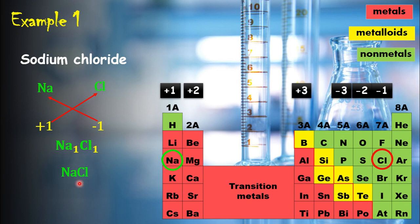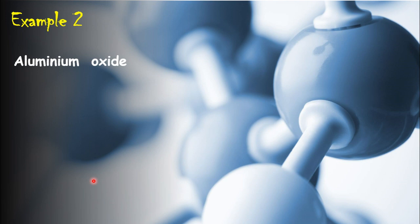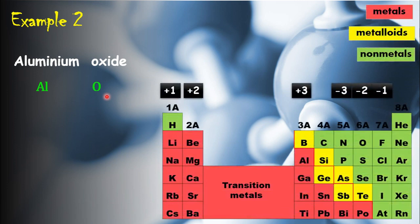Note that ionic compounds are always chemically neutral — that means all the positive charges equal the negative charges. Here sodium has a plus one charge and chlorine has a minus one charge, so it is chemically neutral. Let's look at another example: aluminium oxide. The positive ion is aluminium and the negative ion is oxygen. According to the periodic table, aluminium is in group three, and the ionic charge of every element in group three is plus three because its outermost shell electron configuration is three.